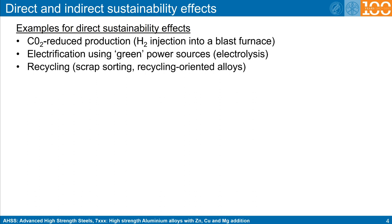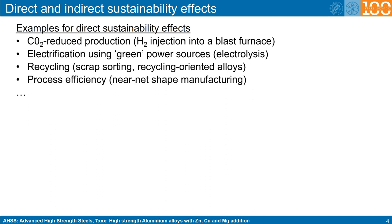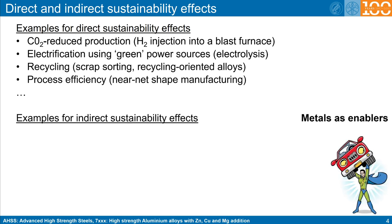This requires research on advanced scrap sorting technologies, and in the future also on recycling-oriented alloy design. Recycling-friendly alloys should be characterized for example by a high tolerance against undesired impurity elements that can enter through the scraps. Another aspect concerns the overall process efficiency. An example is near-net shape manufacturing, such as known for instance from thin slab or thin strip casting. Next are some examples for indirect sustainability effects in metallurgy. These refer to the reduction of emissions and energy consumption that are enabled when using advanced materials for making other products, processes, or services more sustainable.